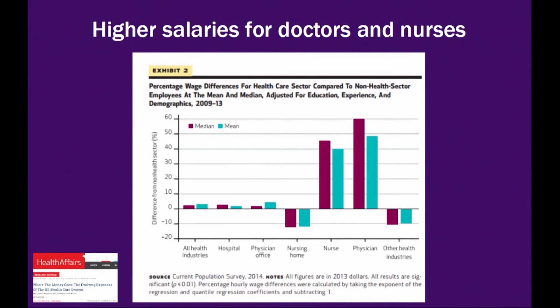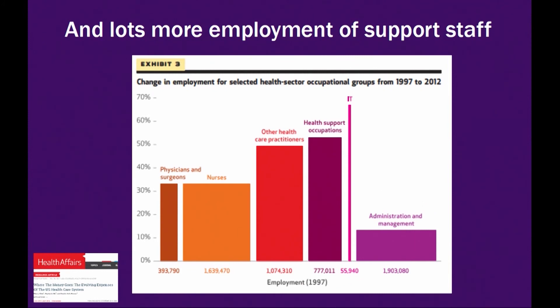That kind of makes sense. If you're a janitor, the wage of janitors is the same in hospitals as in office buildings. But if you're a doctor, you can only work in a hospital. There's specialized labor — they're only in this world, and their wages have gone up a lot. Other people's wages haven't gone up so much. So one piece of this is more compensation for highly skilled employees in the healthcare sector.